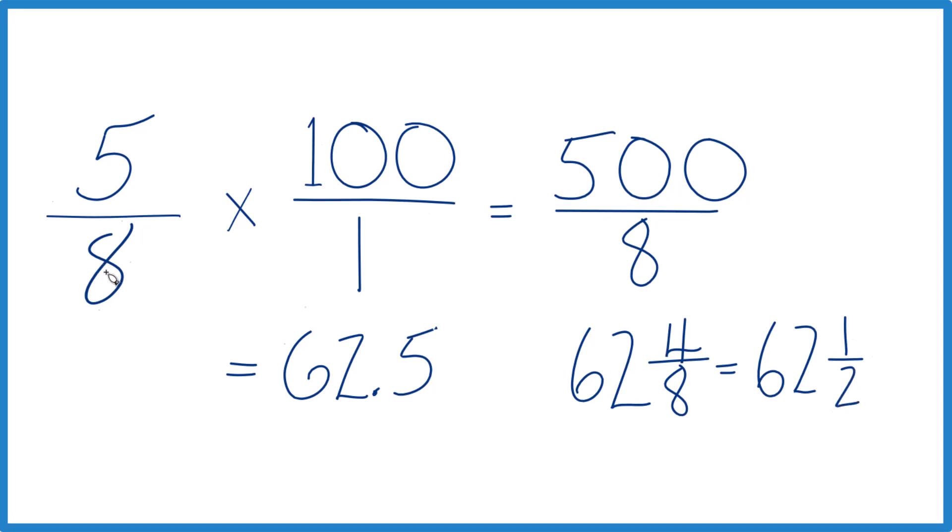So either way, 5 eighths of 100 or 5 eighths times 100, you end up with 62.5. Or if you need a fraction, 62 and 1 half. This is Dr. B. Thanks for watching.